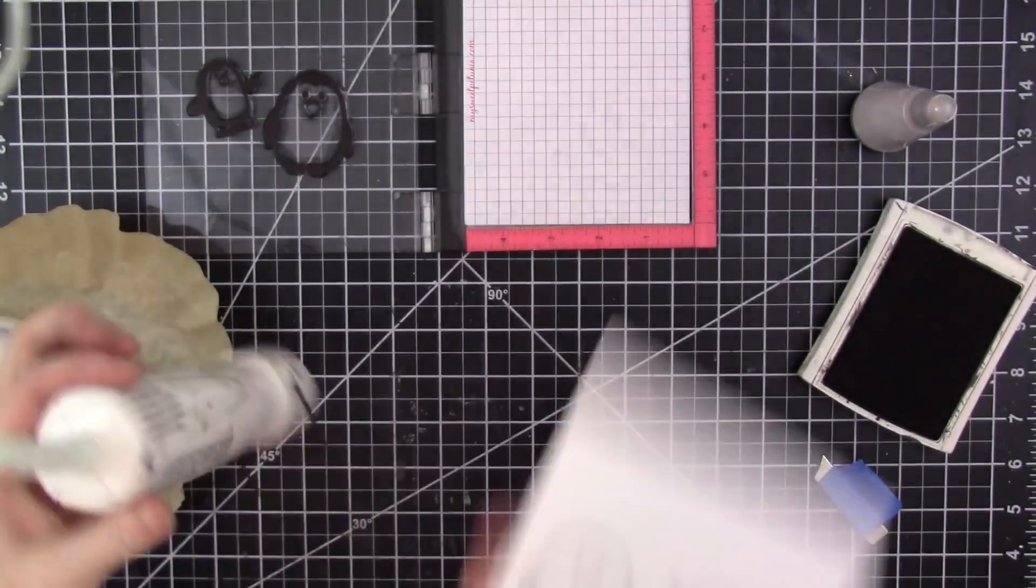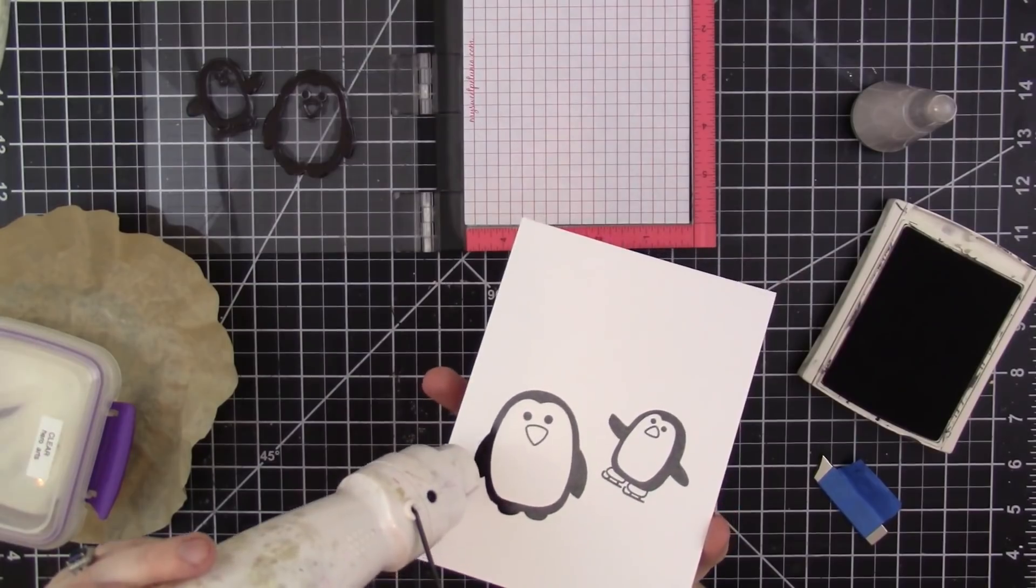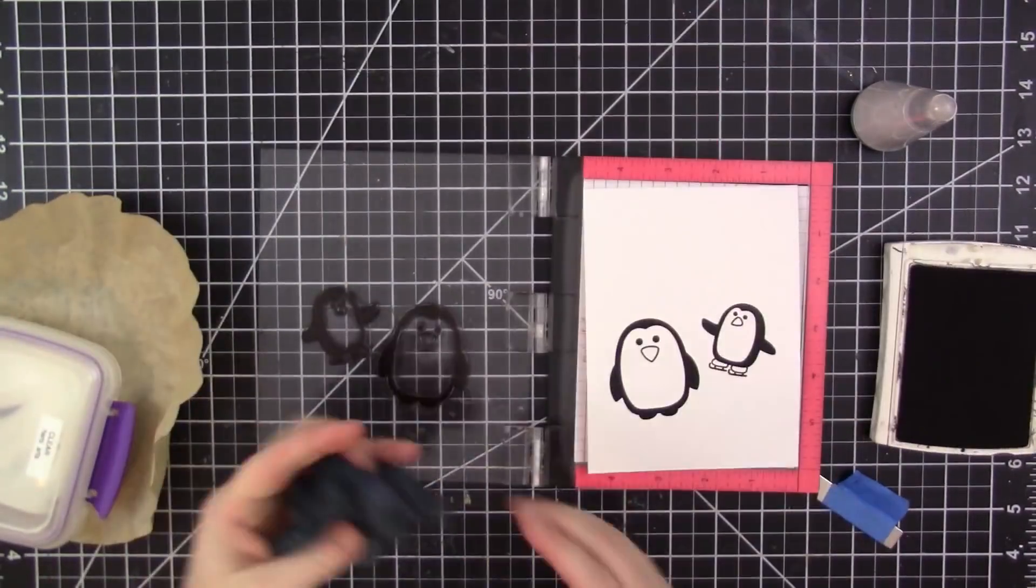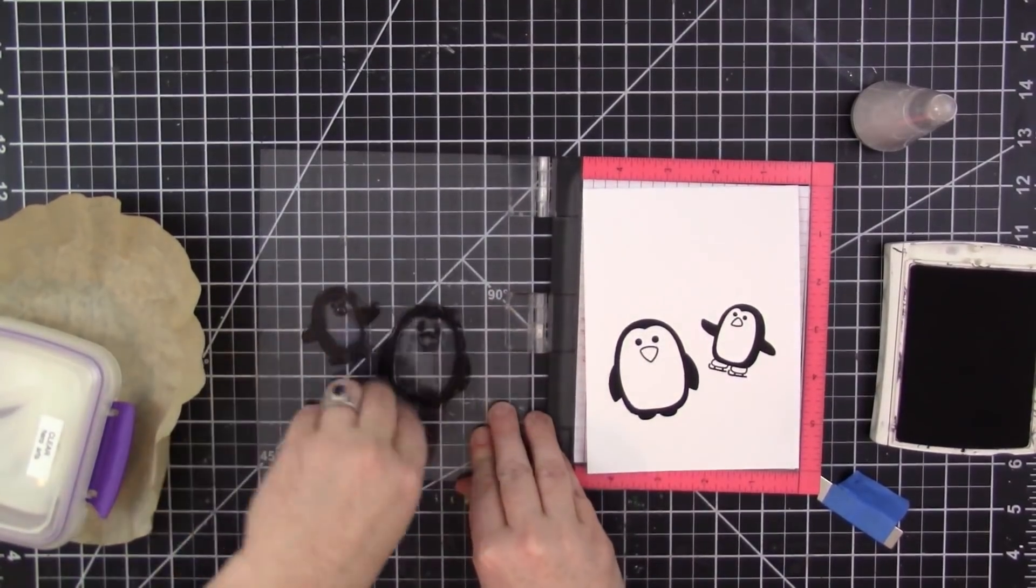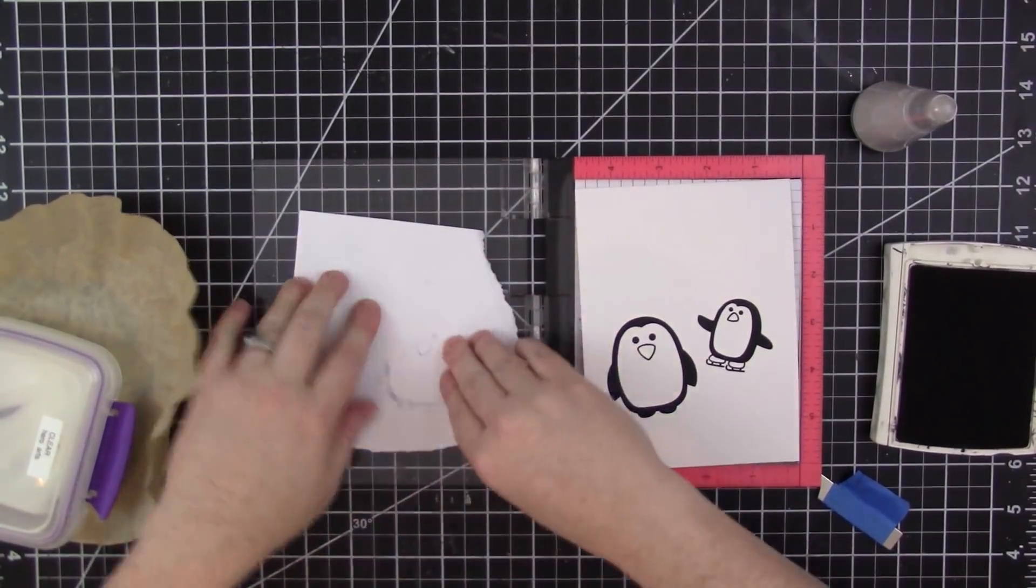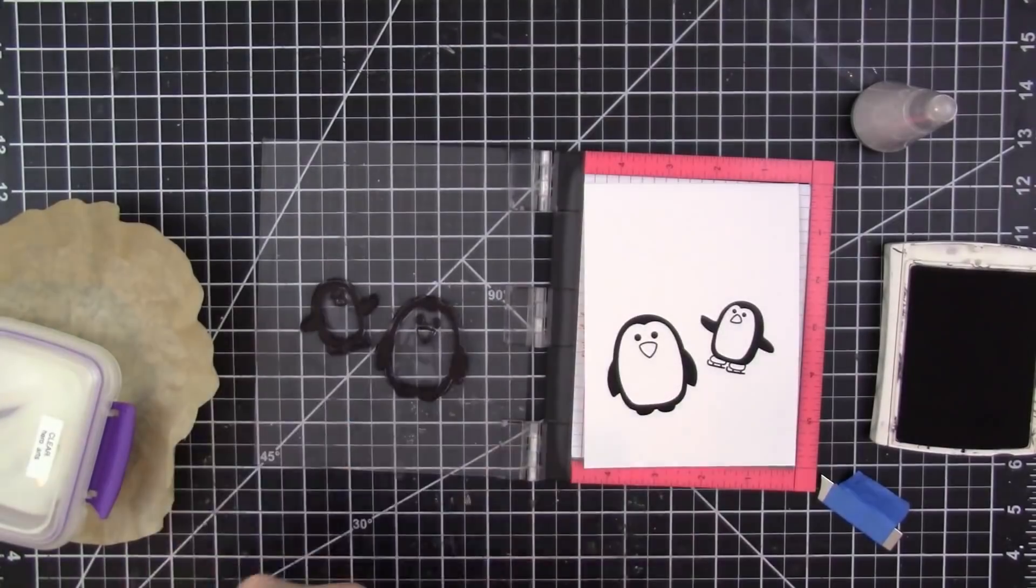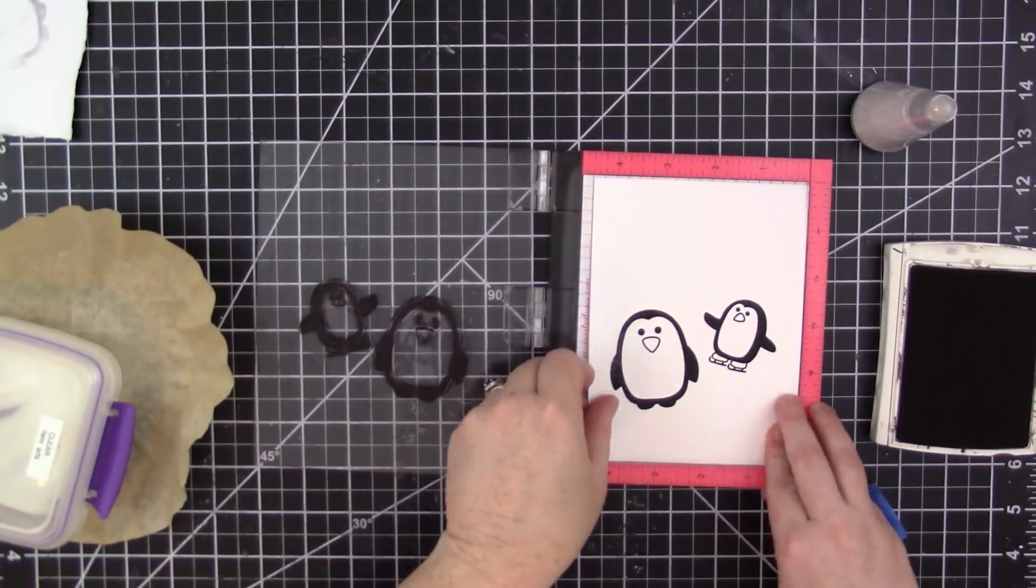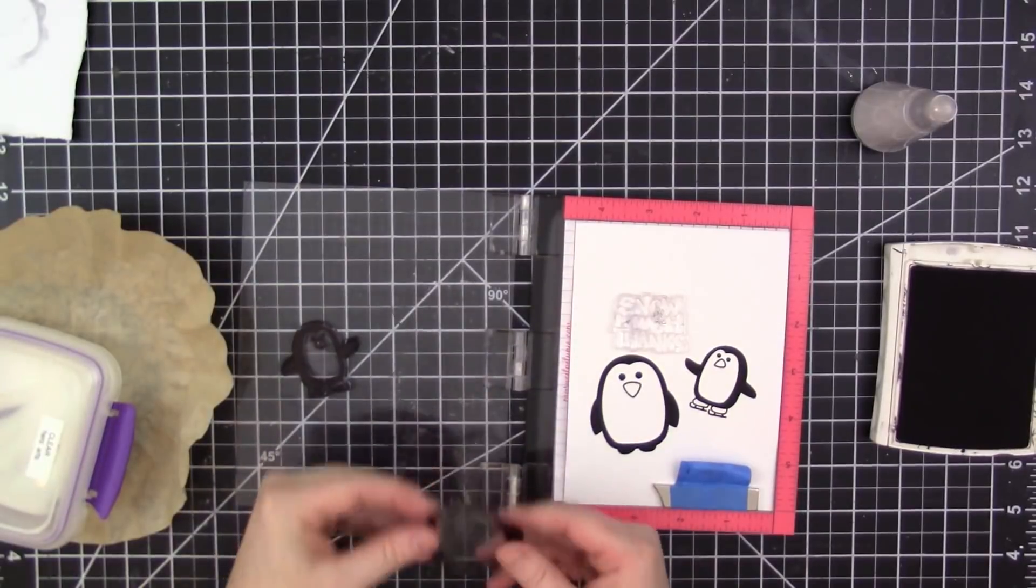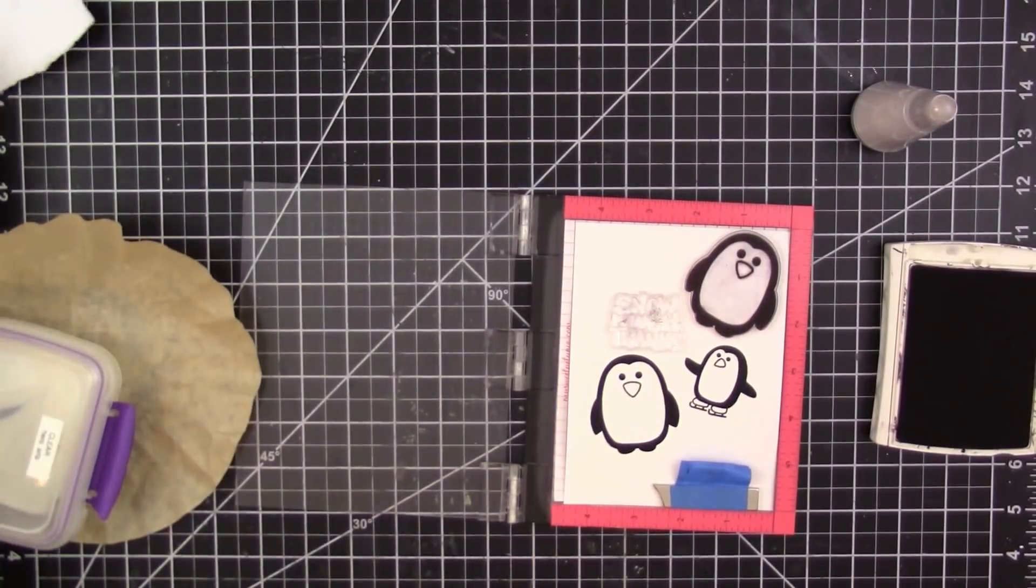And then what I do after stamping is I clean off the stamps with my Lawn Fawn stamp chamois. The chamois gets stained so it looks dirty, but the stained chamois doesn't transfer any ink back onto the stamps. So I clean them off and then I take a scratch piece of paper and just apply it over the stamps.